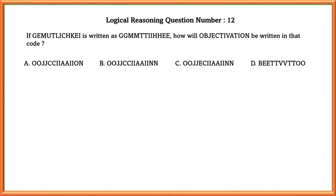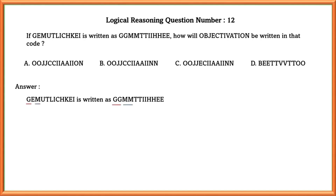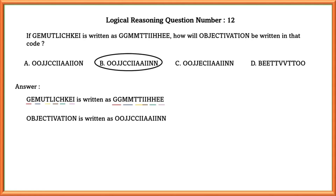Logical reasoning question number twelve: if the given letters are written as other letters, how will this letter be written in code? In the given letters, the odd letters are repeated twice — G is twice, M is twice, T is twice, I is twice, H is twice, and E is twice. So similarly, applying the same rule to the second set of letters, we get option B.